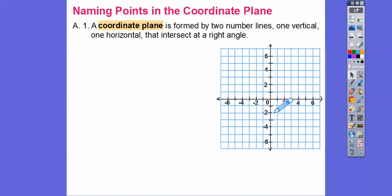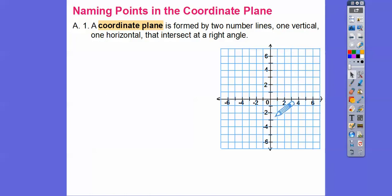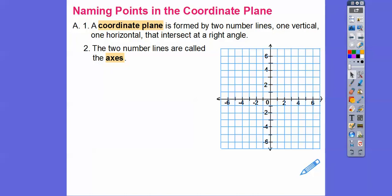See this number line? Notice up is positive and down is negative. And then the horizontal one — right is positive and left is negative. This is zero for both the vertical and the horizontal axes, and that's what they're called — they're called axes.